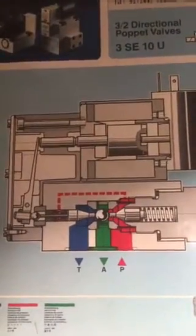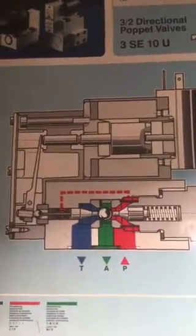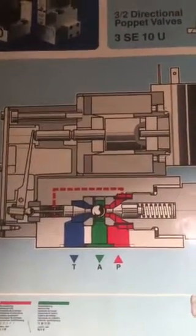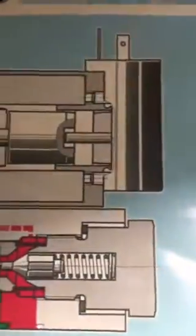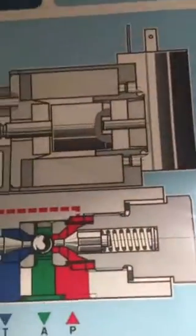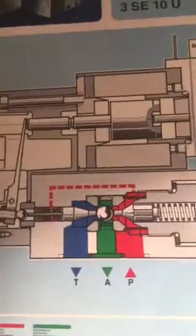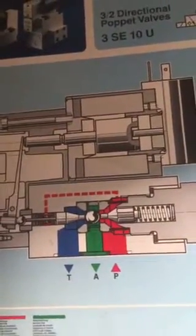This is Adnan Sunny from Sunny Enterprises. In this video we showed you the three by two directional poppet valve, model number 3SE10U, including the schematic diagram, the actual valve, and the pictorial diagram — the x-ray of the valve — where you can see all the internal parts. This is called a three by two directional poppet valve.